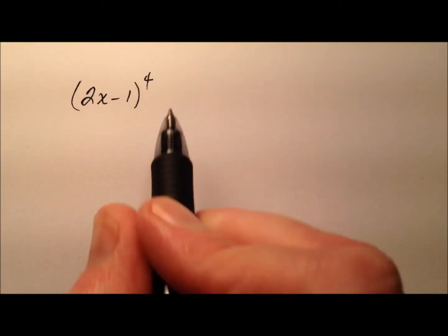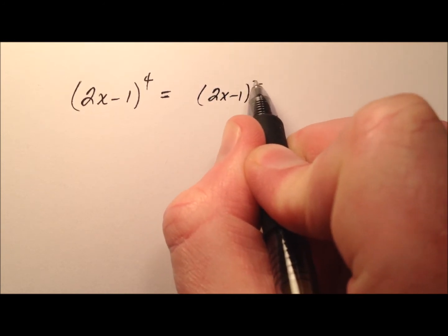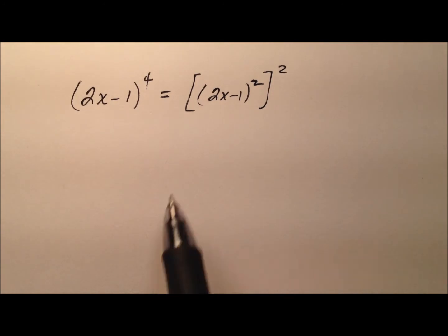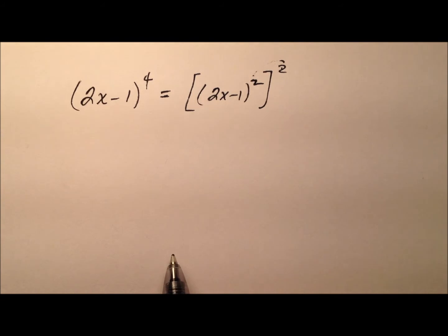In order to do that, I'm going to rewrite it as 2x minus 1 squared, but then whatever I get for that, I'm going to square it. Because this power of a power here, 2 times 2 is 4, so I can break it down this way.